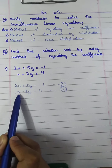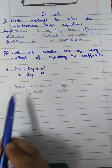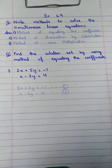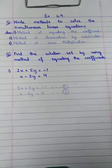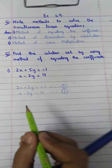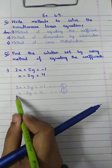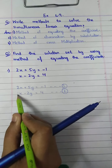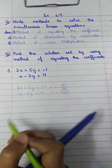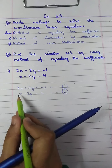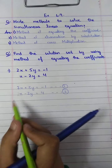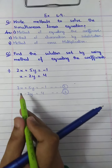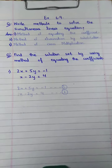The first step is to look for any variable which is single — that is, which has a coefficient of 1. If there is any variable with coefficient 1, you will start solving from that equation.